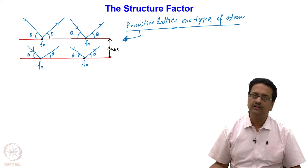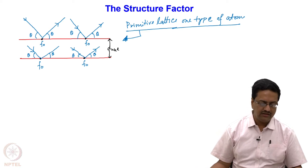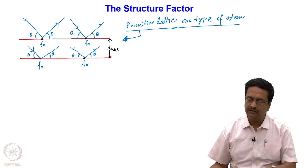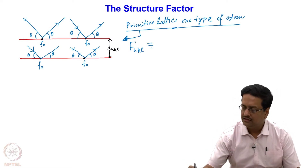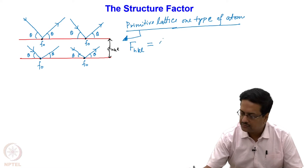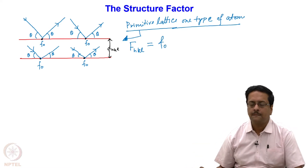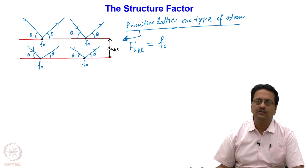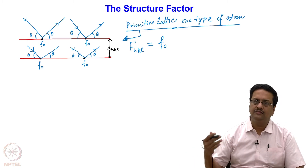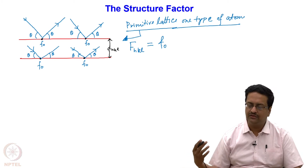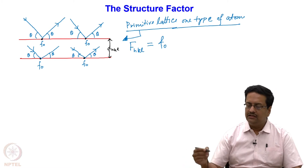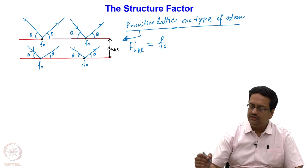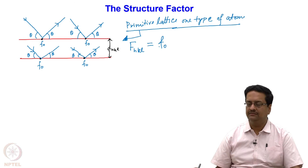If we consider a primitive lattice of one type of atom, then the structure factor F_hkl is nothing but the atomic scattering factor f_0, because all the atoms are located at the origin. In a primitive lattice you have 8 atoms located at the 8 corners of the unit cell, and all being the same, the summation is simply the atomic scattering factor f_0.